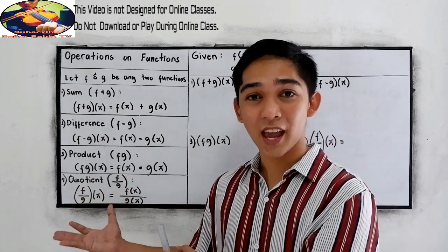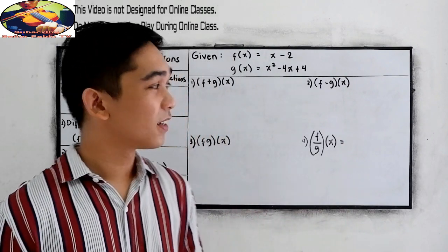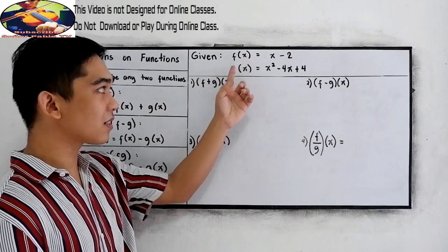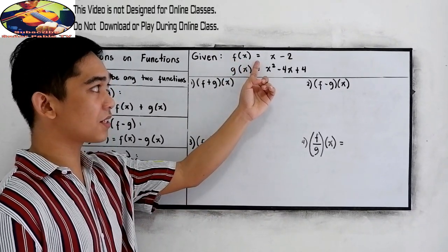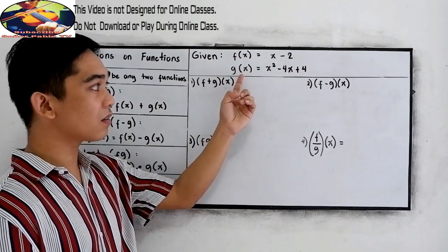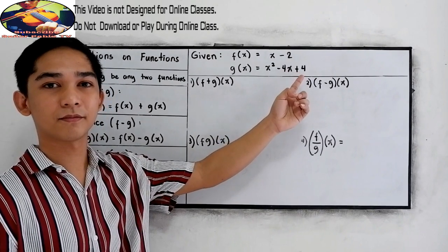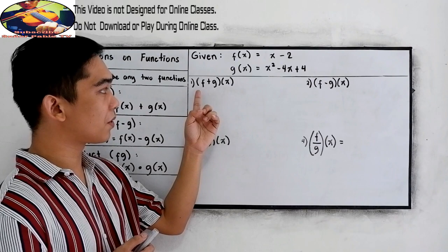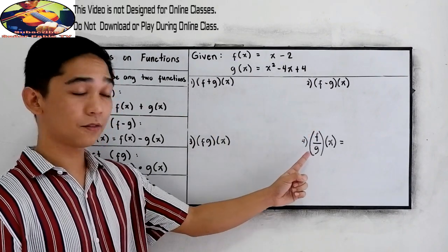So to better understand, let's have some application. We have a given here, f(x) and g(x). For f(x), that is equal to x minus 2. And g(x) is equal to x squared minus 4x plus 4. We're going to find number 1, number 2, number 3, and number 4.